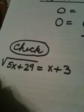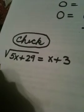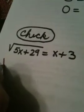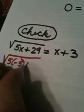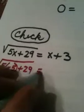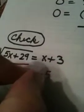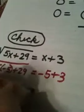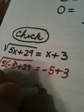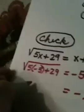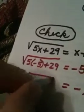If I plug a negative 5 in here, every place I see x, I have 5 times negative 5 plus 29 equals negative 5 plus 3. Negative 5 plus 3 is negative 2. And when I look under here, look what happens.